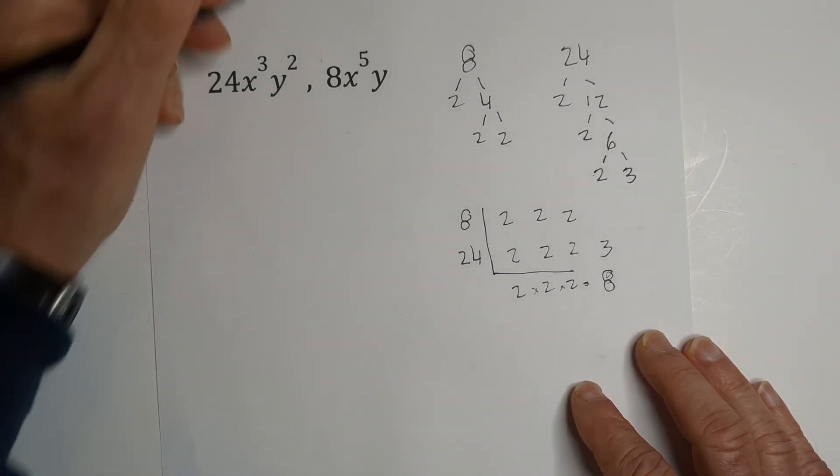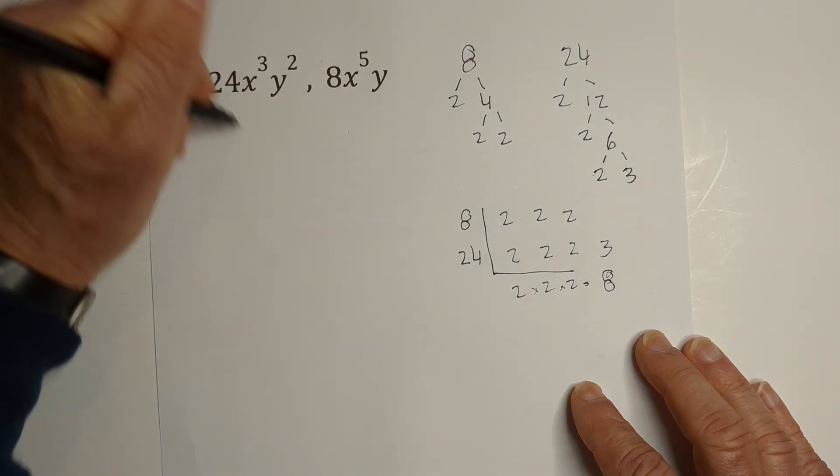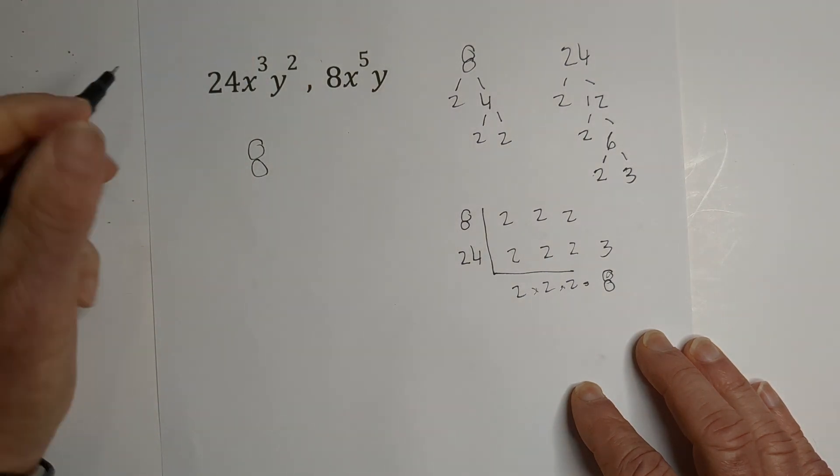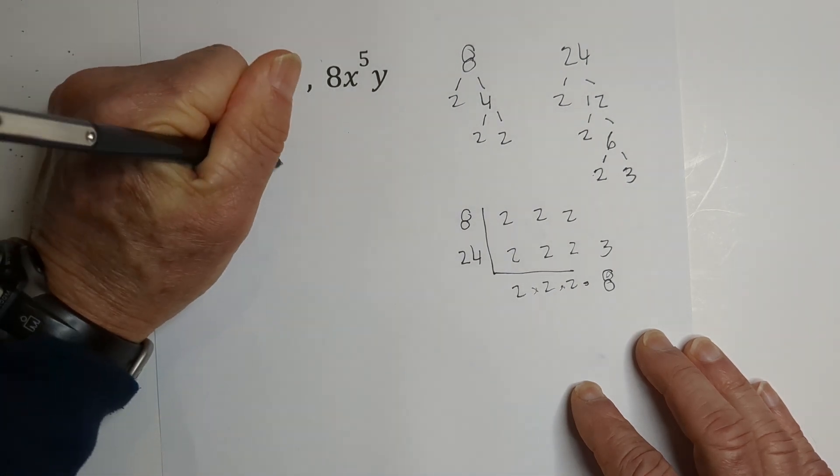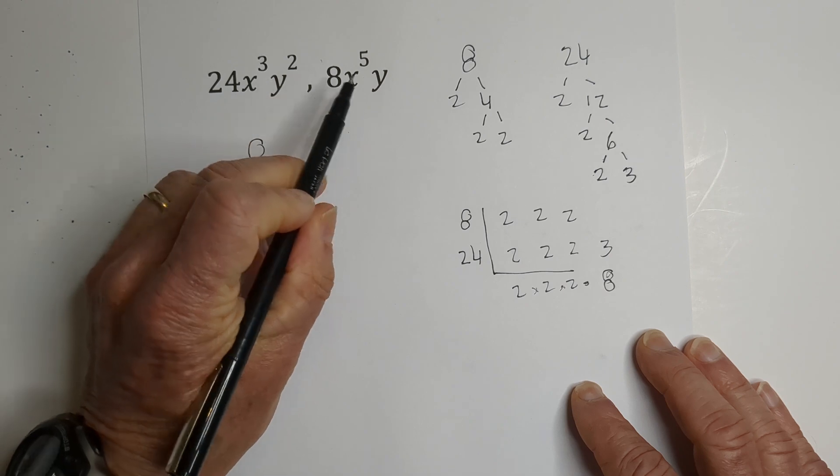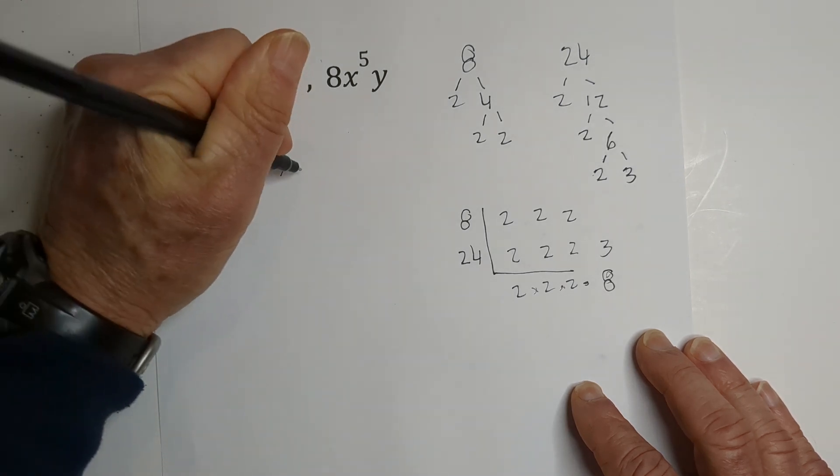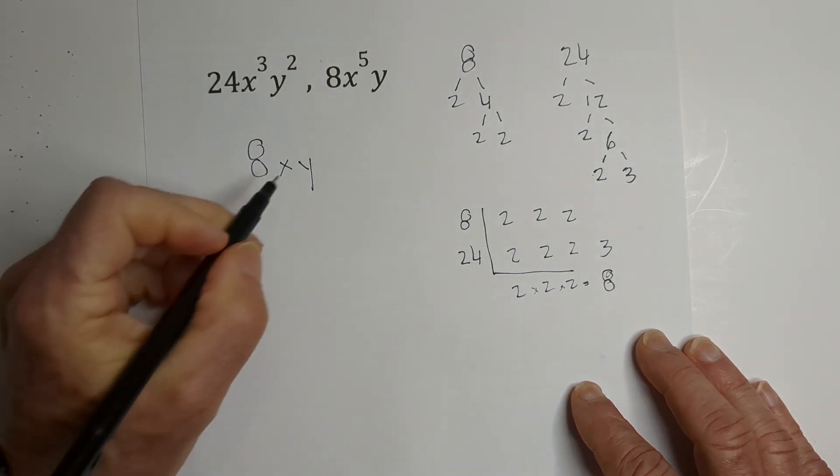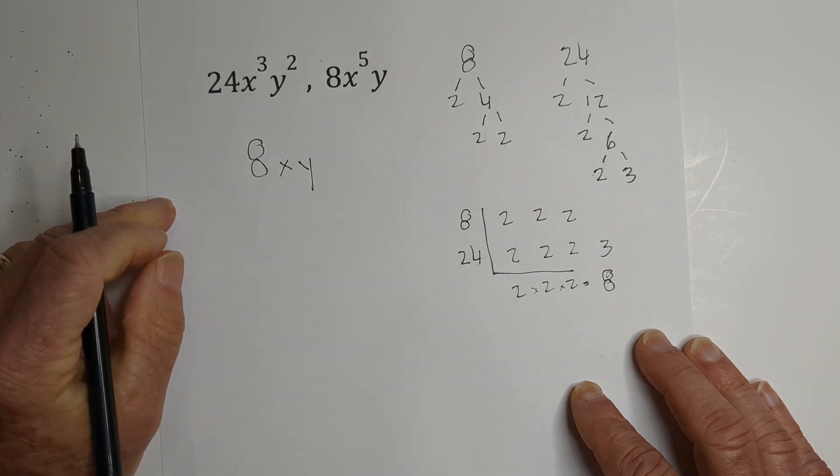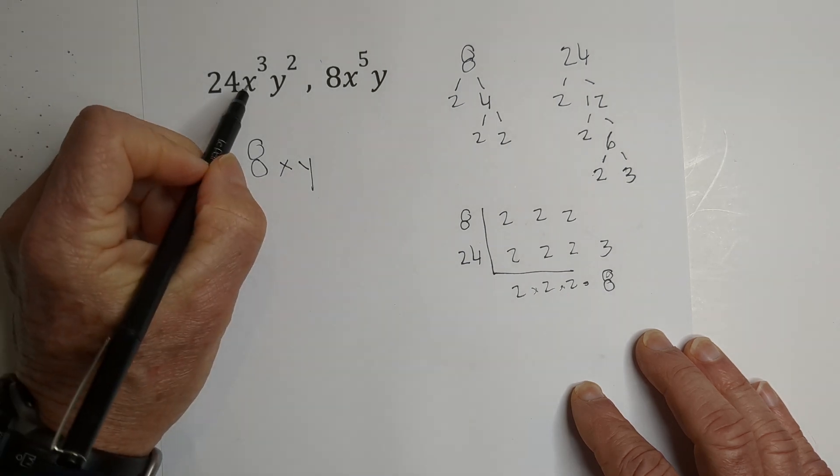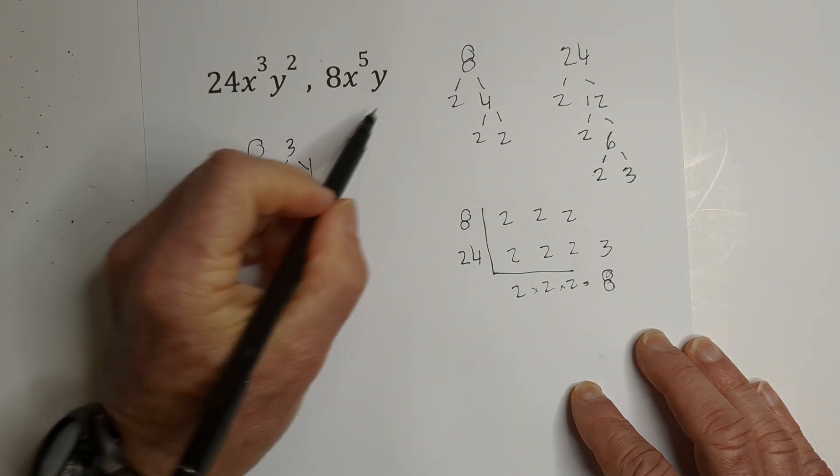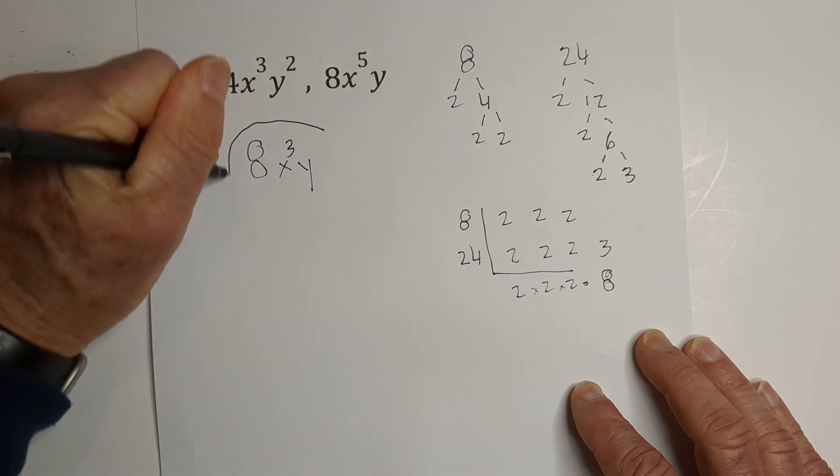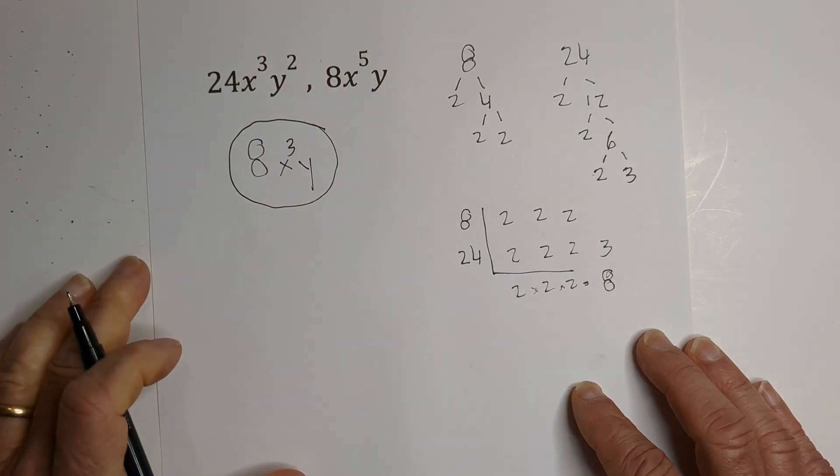So now we have step 1, which is we have the greatest common factor of the coefficients, 8. Now let's look for common variables. We have x and x, and we have y and y. So we're multiplying these together, and then let's look for the lowest. x is to the 3rd, and the y, the lowest, is to the 1st. So there would be the greatest common factor.